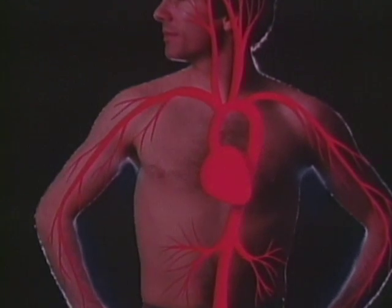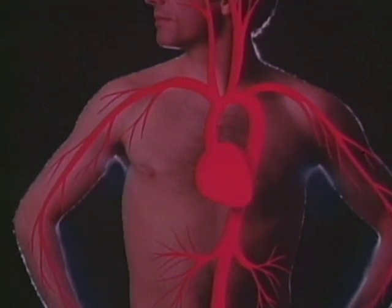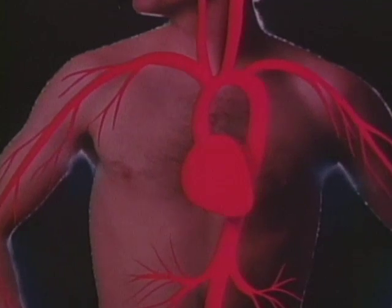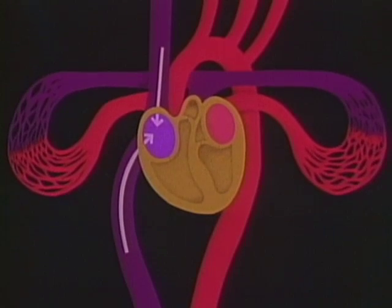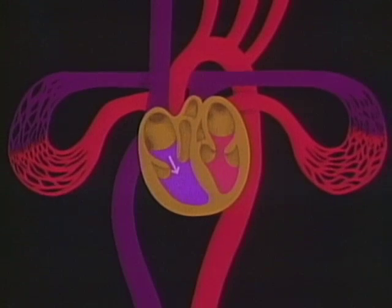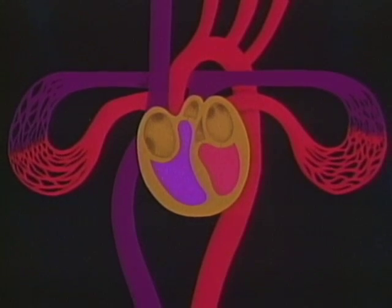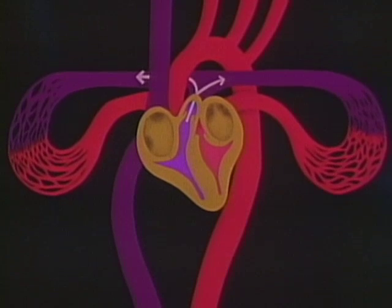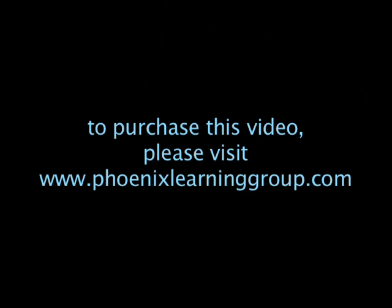Blood returning from its circuit through your body is carrying carbon dioxide and other wastes from the cells. That blood enters one of the heart's two upper chambers, the right one. That chamber contracts, squeezing the blood into the lower right chamber. Then that chamber contracts, and the blood is squeezed out of your heart and pumped through arteries to your lungs, where it picks up oxygen.